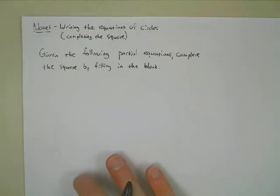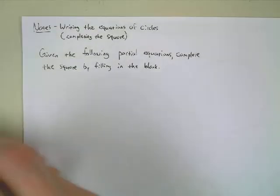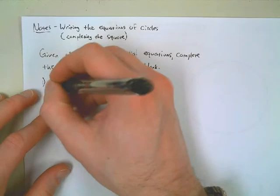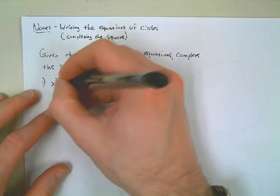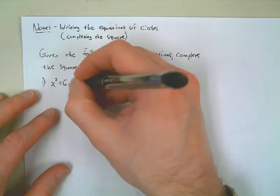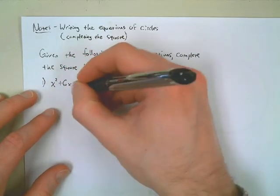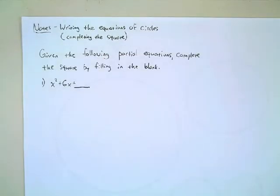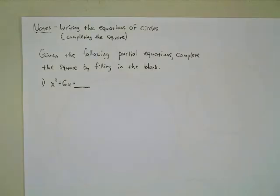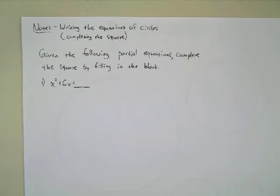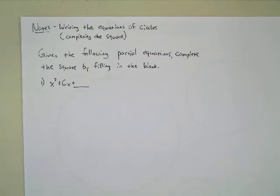Okay, so let's start off with number one. So let's say we have x squared plus 6x plus blank, and we want to fill in that third number there that would then result in this thing being a perfect square.